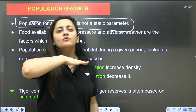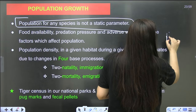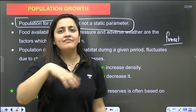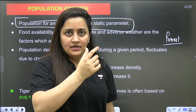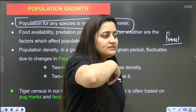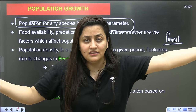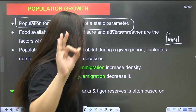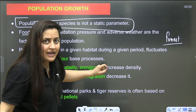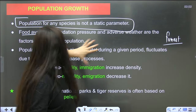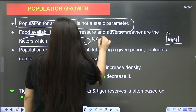Population for any species is not a static parameter. You have to be specific — for example, the population of lions, the population of tigers. Factors like food availability, resource availability, predation pressure, and weather conditions all affect the population size. These are the factors which will affect the population.